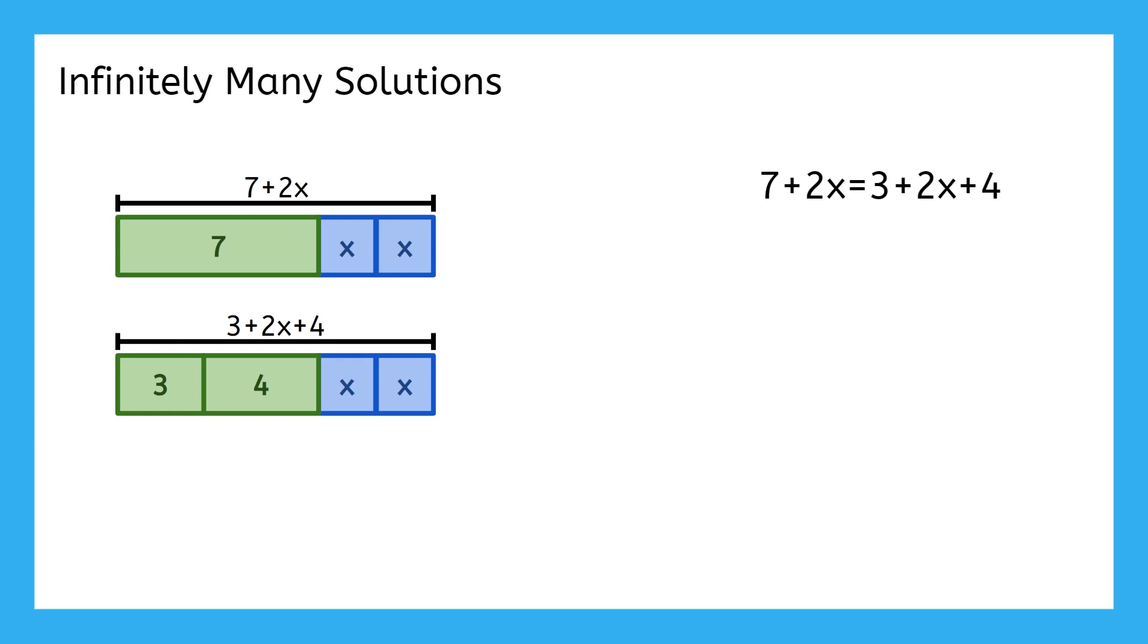Notice how, in our visual representation, these two expressions line up perfectly? The constants are exactly the same, since 3 plus 4 is the same as 7. And the variables are exactly the same, because there are two x's in each expression. It doesn't matter what value we put in for this variable, no matter how big or how small. Since there are the same amount of x's in each expression, they will always be equal to each other.